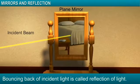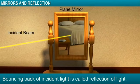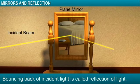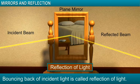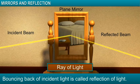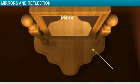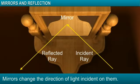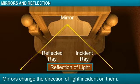You see only the bright moon and the stars in a still pond at night. When light is incident on any smooth, shiny surface like a mirror or a tin sheet, it reflects back. This is called reflection of light. The path along which light travels is called a ray of light. Basically, mirrors change the direction of light rays incident on them.